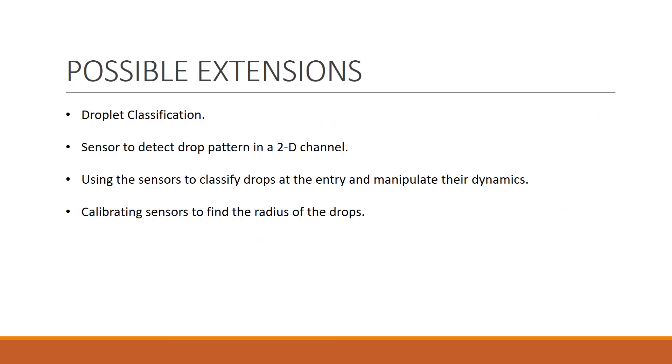I am currently working on droplet classification using the LDR sensors. The idea here is to use the peak features extracted from the sensor's data and use them to classify drops. A possible extension of the sensor is a 2D pattern sensor, which will be able to detect the pattern formed by these drops in a 2D channel. This can be of huge impact in all the experiments involving 2D channels.